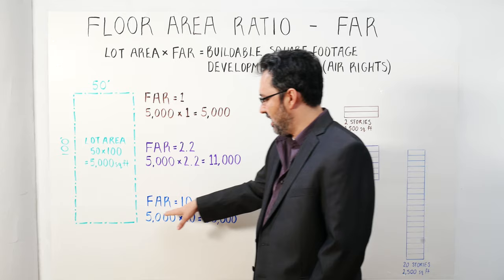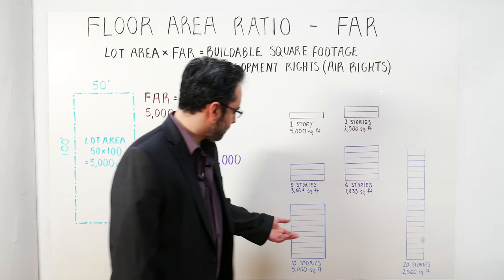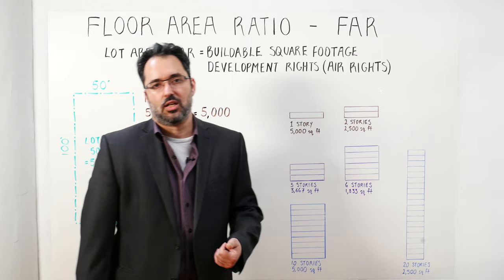The last example will be an FAR of 10. Let's say you're in an R10 zone in New York City. That's 5,000 square feet times 10, which is 50,000 square feet, resulting in a building of 50,000 square feet. So that's 10 stories at 5,000 square feet per floor, or 20 stories at 2,500 square feet per floor. That's basically how you determine the size of the building with regards to square footage.